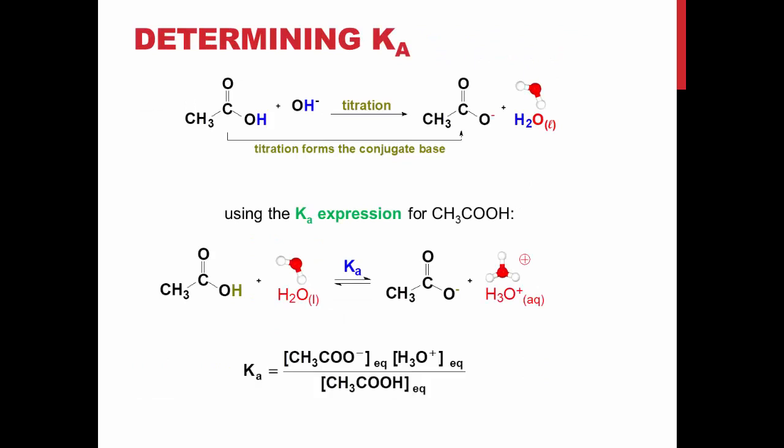The Ka is another value you will be finding from your titration curve. Remember that this is the dissociation constant for acid, and is dependent on the concentration of the hydronium ion, the conjugate acid, and the conjugate base of acetic acid.